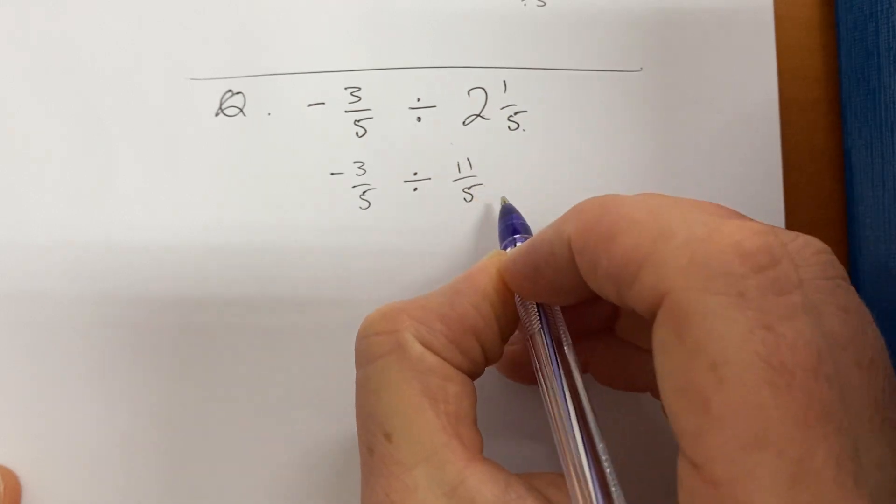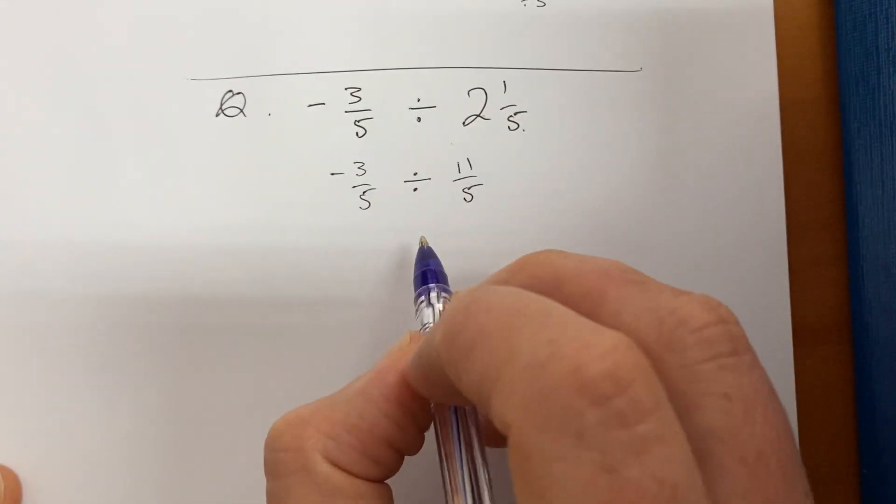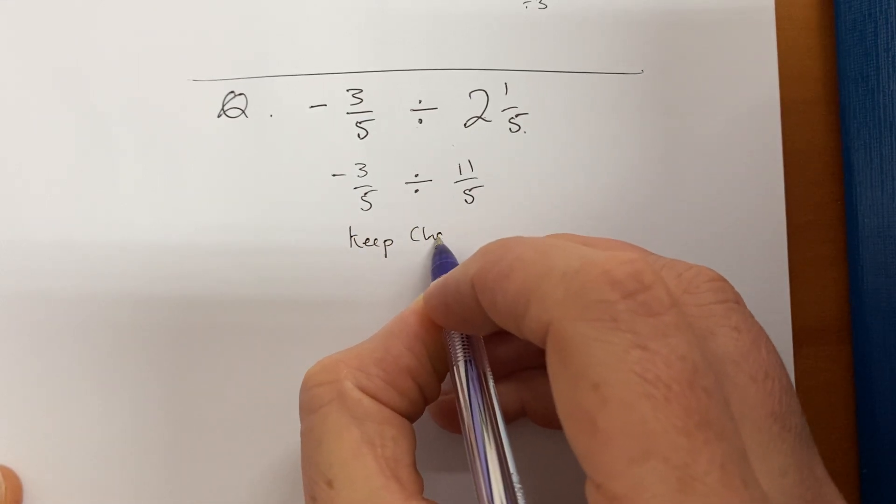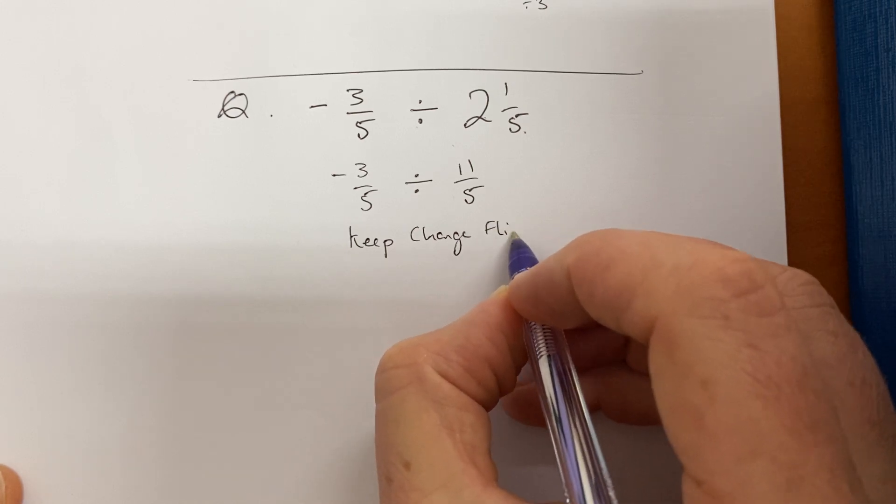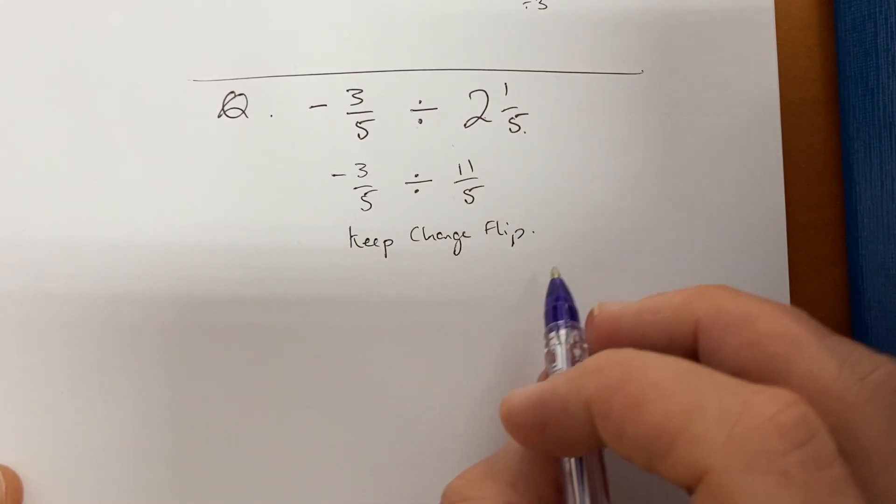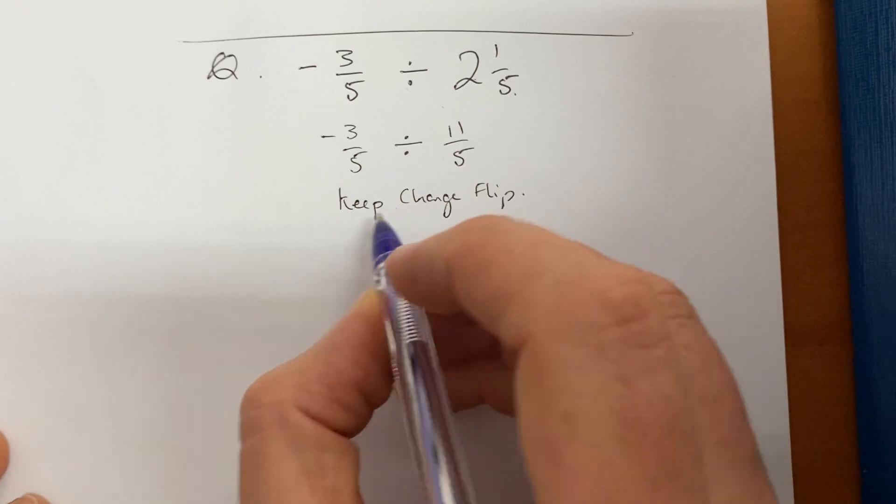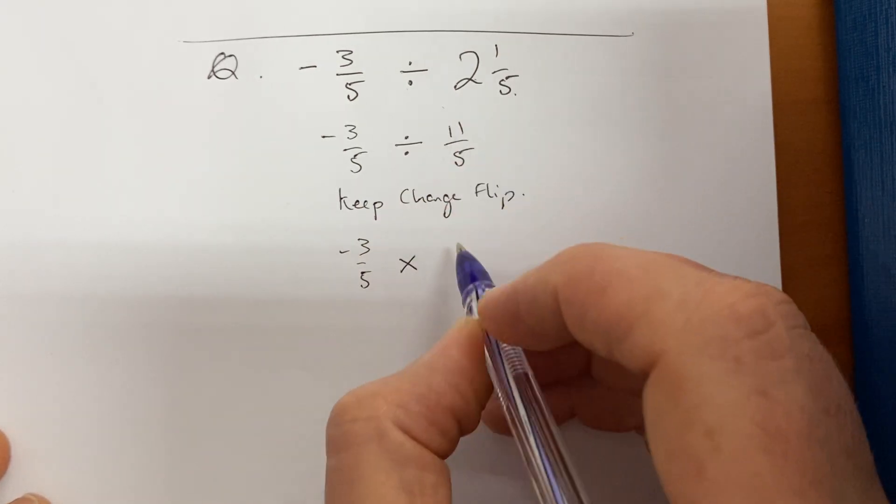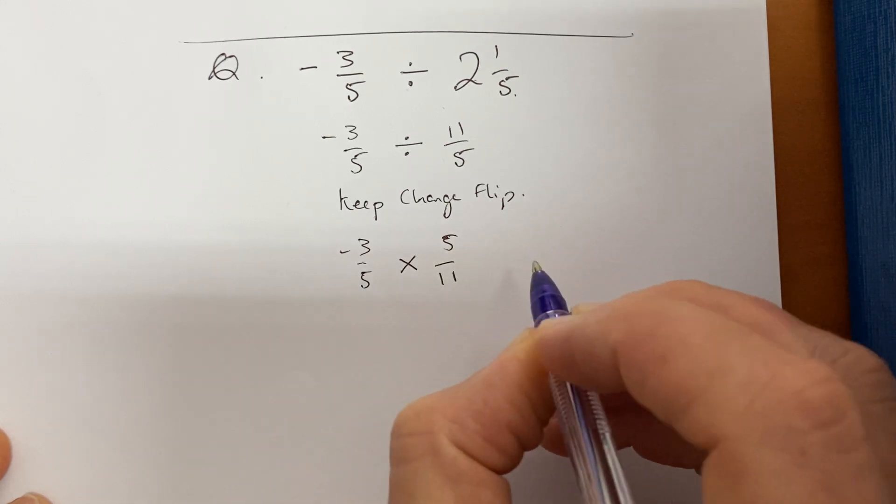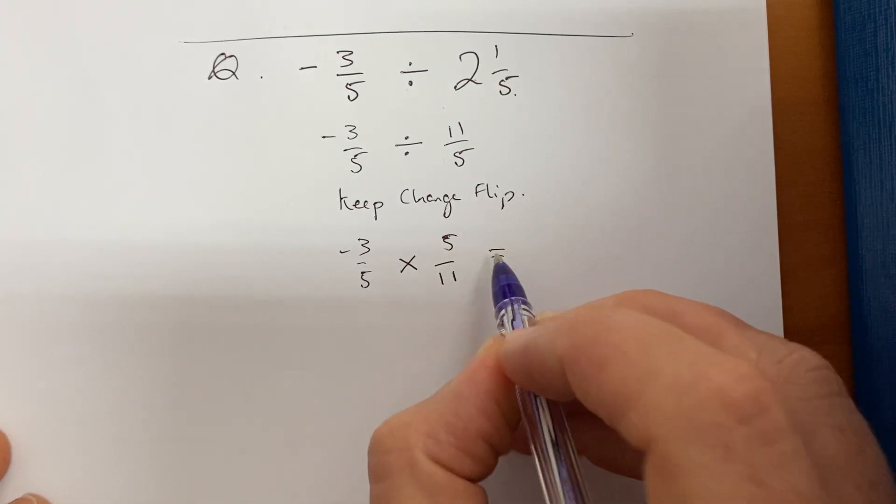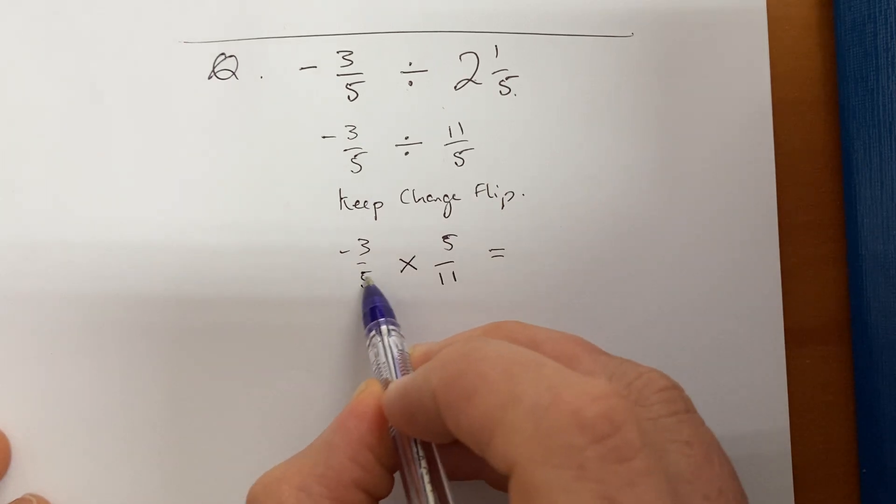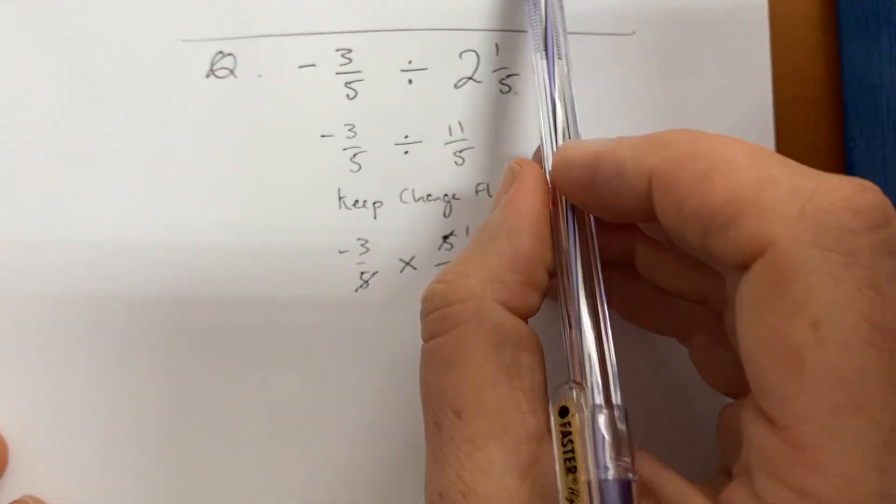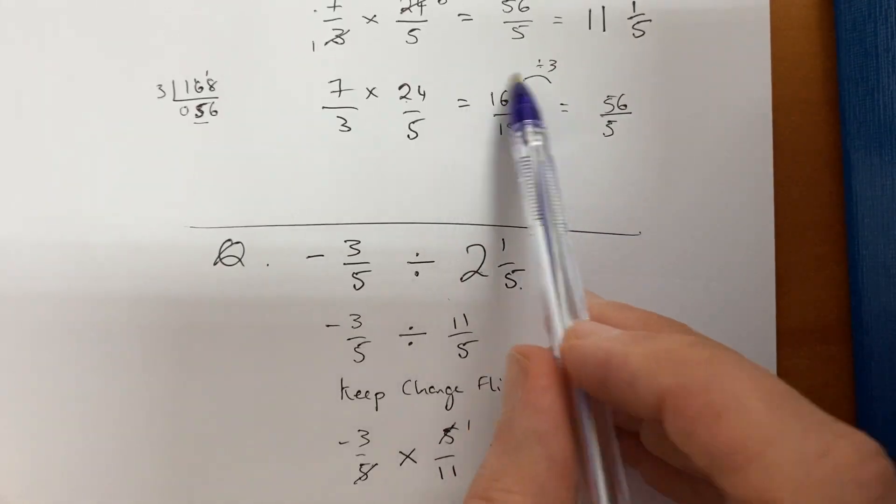All right, we're going to use our rules of dividing, so keep, change the sign, and multiply by the reciprocal, or just call it flip. Keep, change, flip. Turkey fried chicken. Minus three fifths, change the sign, multiply, and 5 over 11. All right, now can I pre-simplify here? Yeah, I'm going to pre-simplify. That 5 divides into that 5 once. Cool. Instead of doing it like this and doing dividing by 3 divided by 3, I'm going to divide by 5 early on before, because multiplication is commutative.